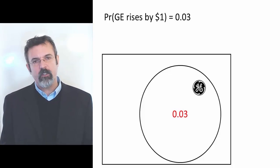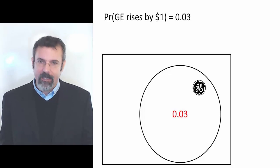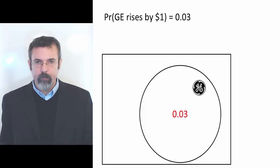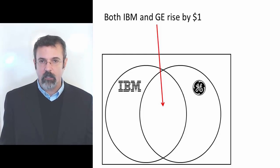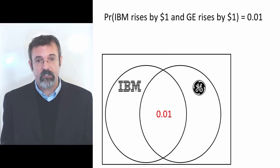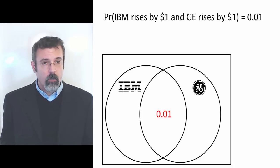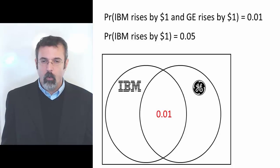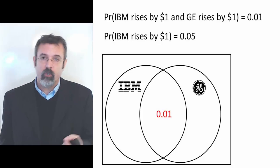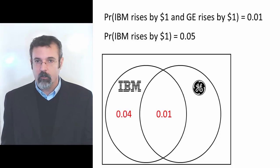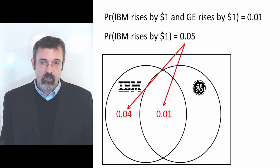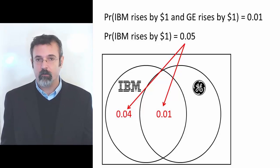On our Venn diagram, we draw a GE circle and in the circle we write 3%. Now suppose if we look at the data further, we find that the probability of both IBM and GE stock rising by at least $1 is 1%. On our Venn diagram, the probability of both IBM and GE rising by $1 is represented by the center area, and in the center area we write 0.01. Now recall, the probability of IBM stock rising by $1 is 5%. We already have 1% in the center area within the IBM circle, which means the rest of the IBM circle must be 4%. The 4% on the left part plus the 1% on the right gives us a total of 5% in the IBM circle — the probability of IBM stock rising by $1.